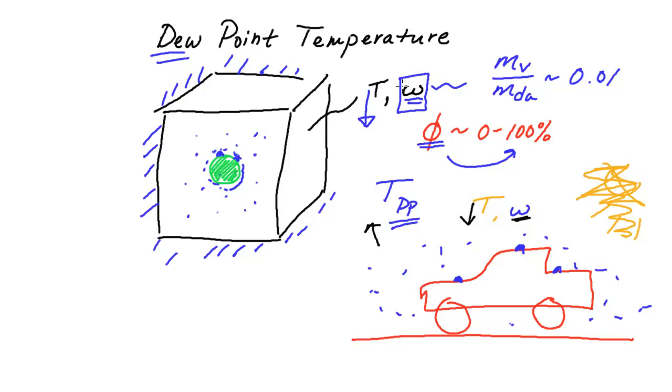It's the temperature at which, if you didn't change your humidity level and you solely just did sensible cooling, or cooling that only affected the temperature, that is the temperature that you would start to see condensation, or that relative humidity goes to 100%.